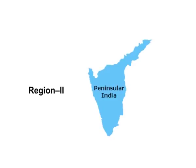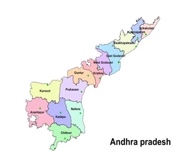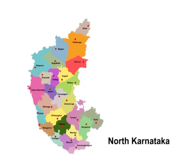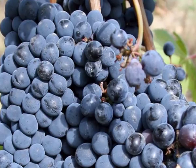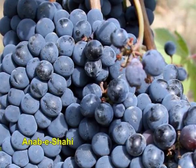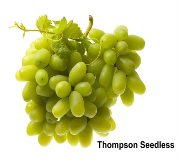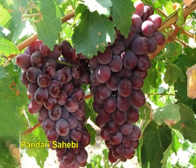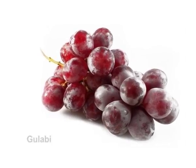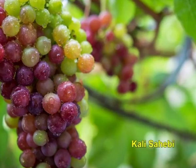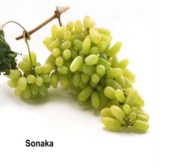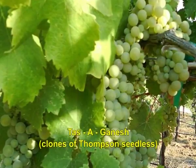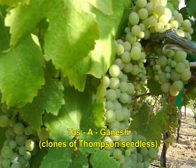The second region consists of Peninsular India, comprising states like Andhra Pradesh, Maharashtra, and North Karnataka. These regions prefer varieties like Anab-i-Shahi, Thompson Seedless, Kali Sahib, Bandari Sahib, Gulab, Bokri, Kali Sahib, Sonaka, and Dakhani, which is a clone of Thompson Seedless.